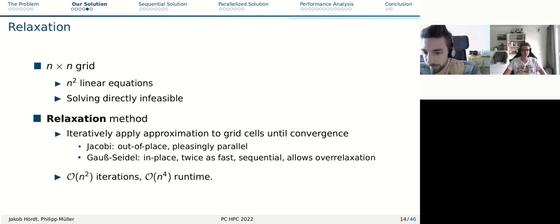This gives us a way to decompose this Laplace equation into a system of linear equations, but for n times n grid, this leads to n squared linear equations, and solving the system directly is infeasible again. So we use a relaxation method, which just means iteratively applying the approximation to every grid cell over and over until the result stops changing. There are two variants: the Jacobi method and the Gauss-Seidel method.